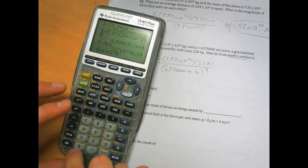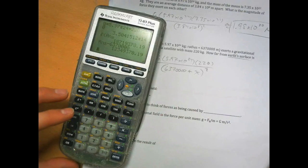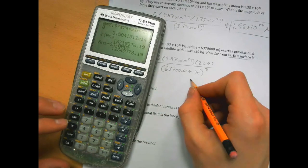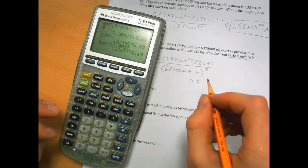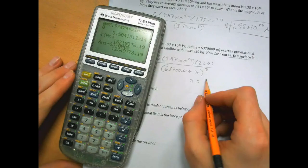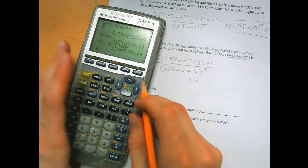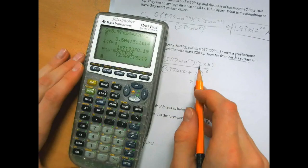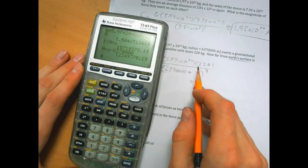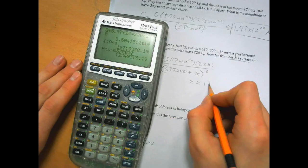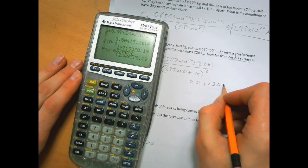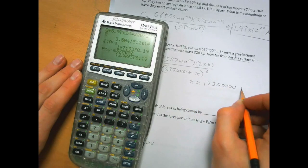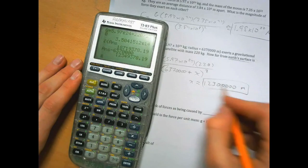And then we subtract 6,370,000, and we get that. How far from the Earth's surface are we? Well, it's about, what's the sigfig actually? Three sigfigs, yeah it says three sigfigs, so it's one, two, three, one, two, three, four, five zeros, meters.